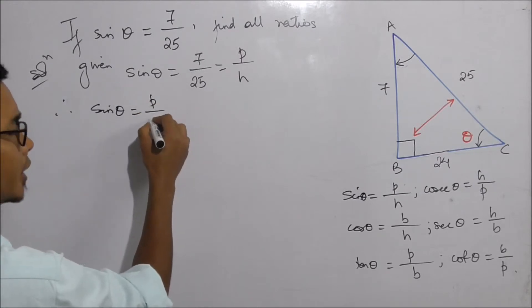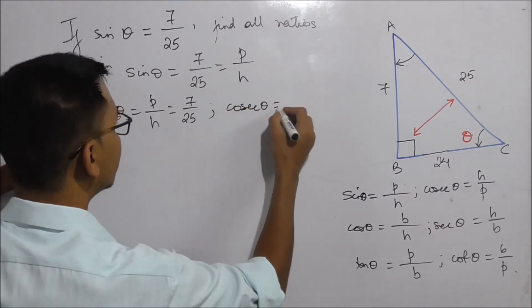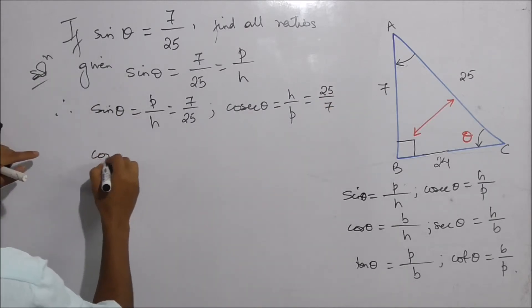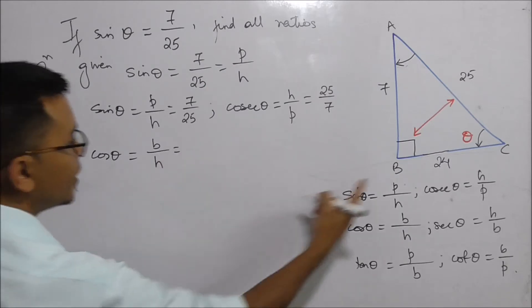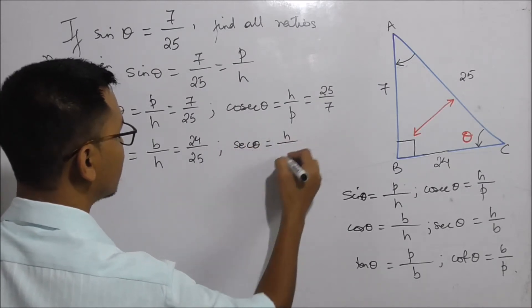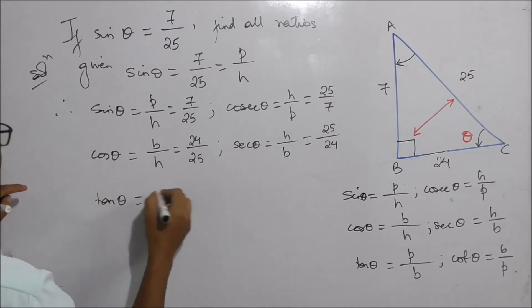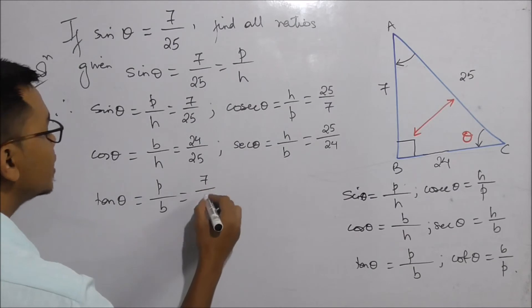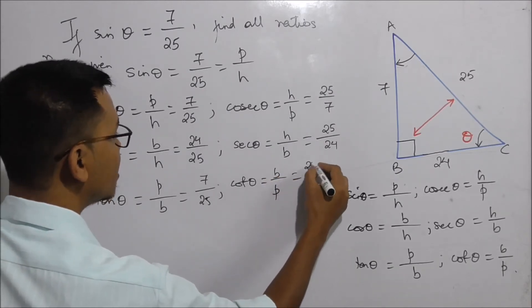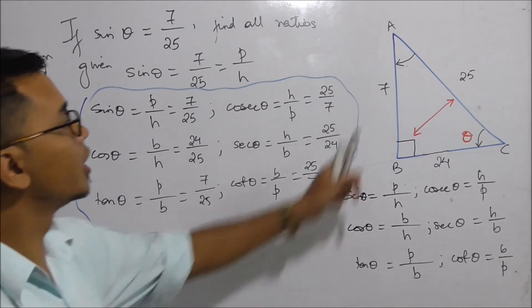So sine theta equals perpendicular by hypotenuse, which is 7 by 25. Cosec theta is the inverse, which is 25 by 7. Cos theta equals base by hypotenuse, which is 24 by 25. Sec theta is the inverse, which is 25 by 24. Tan theta equals perpendicular by base, which is 7 by 24. Cot theta equals base by perpendicular, which is 24 by 7.